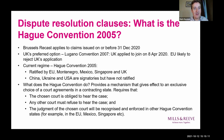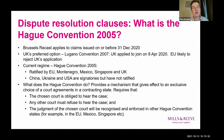Turning to what the Hague Convention does: in short, it provides a mechanism that gives effect to exclusive choice of court agreements in a contracting state. It requires that the chosen court specified in an exclusive jurisdiction clause must hear the case. Any other court where a case is incorrectly brought must refuse to hear it, and the judgment of the chosen court will be recognised and enforced in other Hague Convention states — for example, in Mexico, Singapore or the EU.